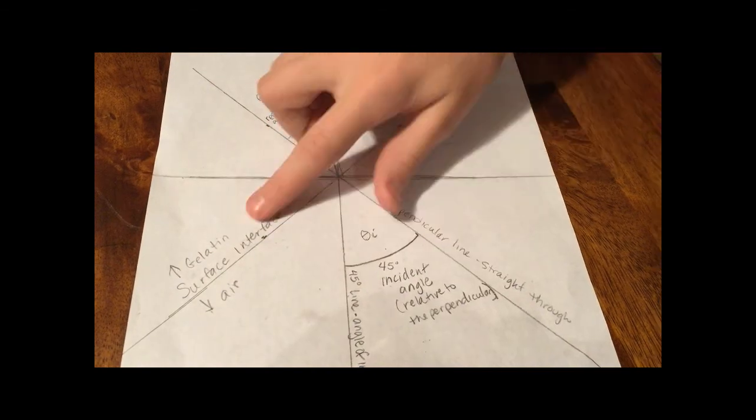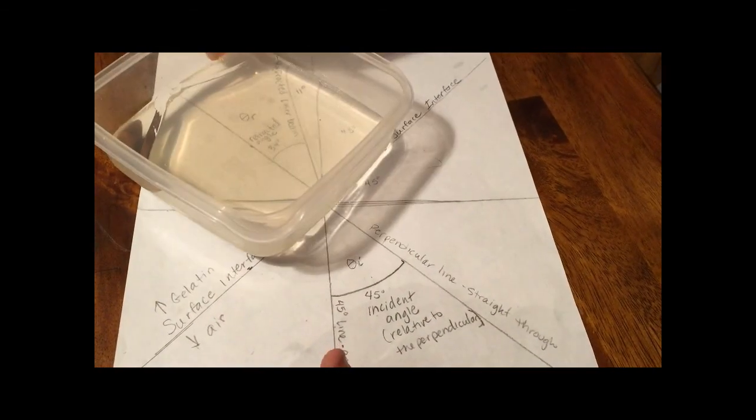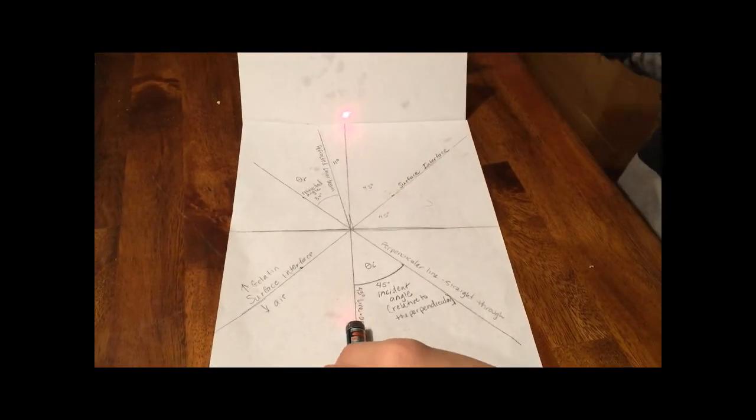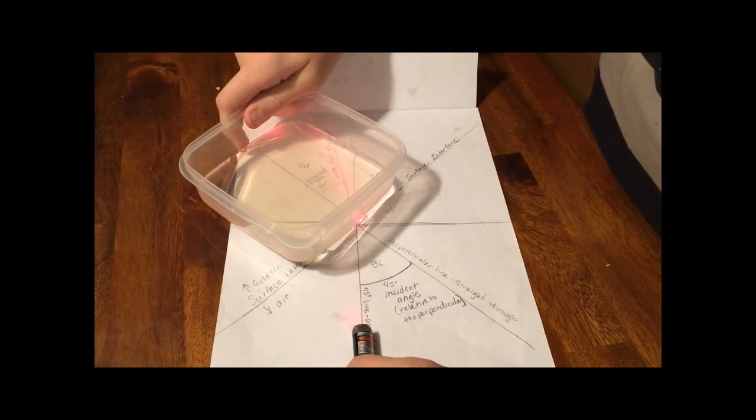Down here represents the air, up here represents the gelatin. If we shine light through here, it goes straight on paper. But when you put the gelatin on, it goes on this new refracted line.